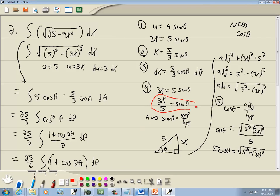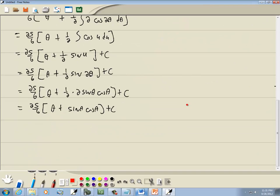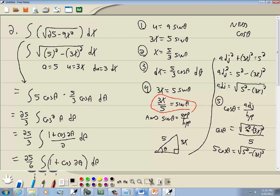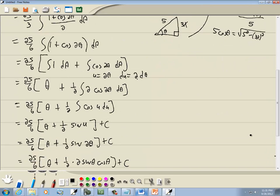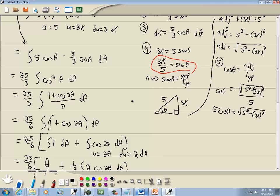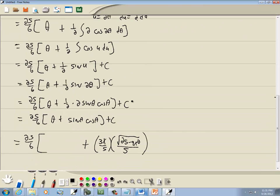Right here we said sine theta is equal to 3x over 5, so we're going to plug in 3x over 5. And cosine theta was equal to the square root of 25 minus 9x squared over 5, plus c.